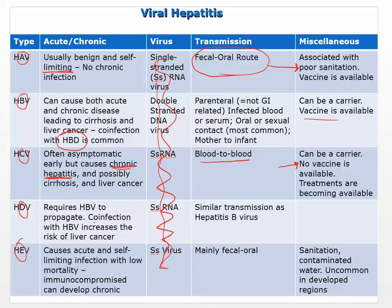Hepatitis D requires hepatitis B to propagate — you can have hep B without hep D, but you can't have hep D without hep B. Co-infection with hep B increases the risk of liver cancer. It tends to be more chronic and we see a higher incidence of liver cancer. Transmission is similar — parenteral, not GI-related. Hepatitis E causes acute and self-limiting infection with low mortality. Immunocompromised people can develop chronic, but in general it's considered more of an acute type. Like hep A, it's mainly fecal-oral, associated with poor sanitation.